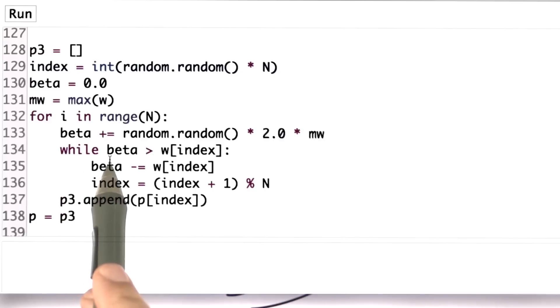And then, while this beta variable is larger than the weight of the current index, I subtract this weight from my beta value, and I increment index by 1 modulo n, the total number of particles. And when it's smaller, I'm done.